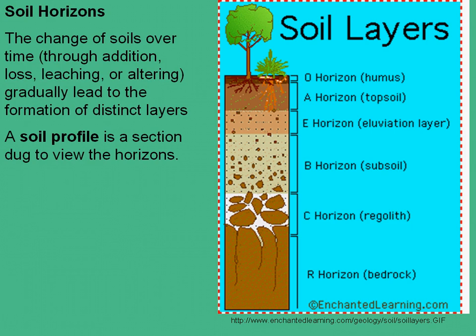The way you get soil horizons is basically through a change of the particular soils over time, through a number of different physical and chemical processes, including addition of new soils, loss of soils through erosion or leaching or other processes, or a physical or chemical altering of the soils in the layer within the particular profile, which gradually lead to the formation of distinct layers within that profile. A profile is simply the section that's dug to view the different horizons.